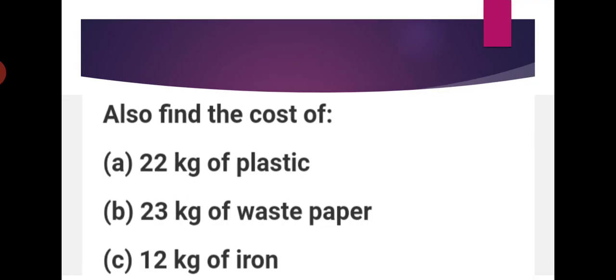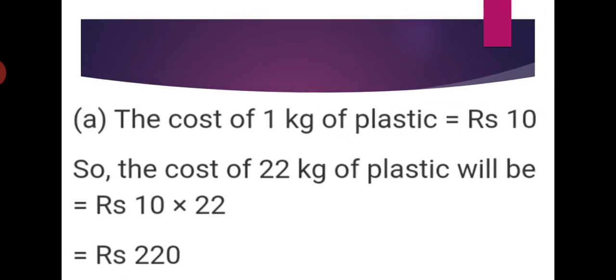Next question: find the cost of 22 kg of plastic, 23 kg of waste paper, and 12 kg of iron. Do them one by one. First, question A: 22 kg of plastic. Check the rate list for the price of 1 kg. Cost of 1 kg of plastic is equal to rupees 10. So cost of 22 kg of plastic will be 10 into 22. You can calculate it directly. Write the question and then do the solution.